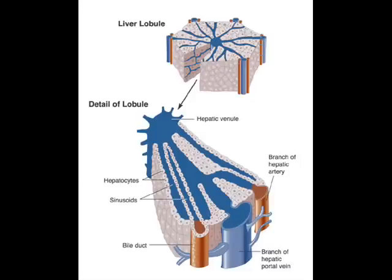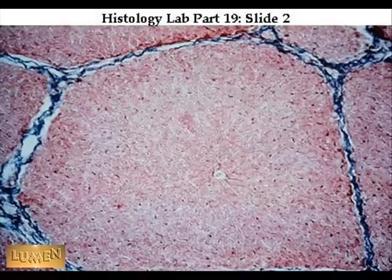In this image, you can see a cross-section of the liver. There are four main vessels, with the major vessel being the hepatic vein. The other vessels are the hepatic portal vein, hepatic artery, and bile duct. They are connected to the hepatic vein by the sinusoids.